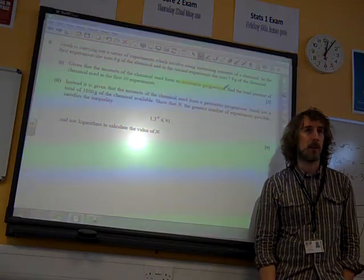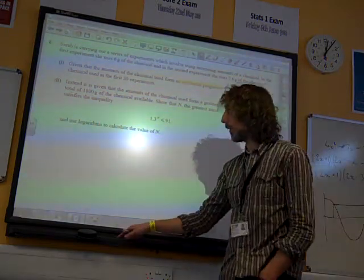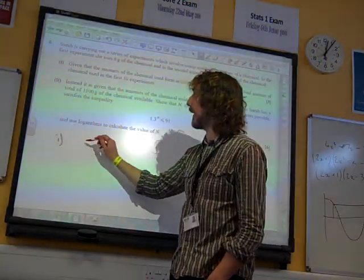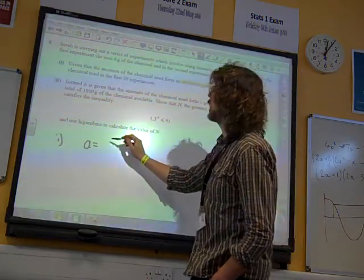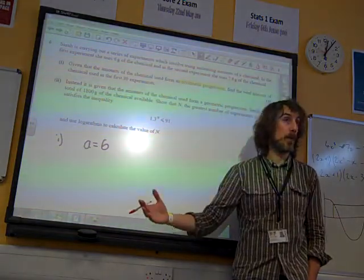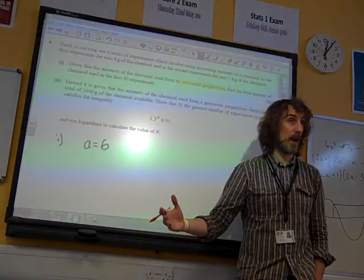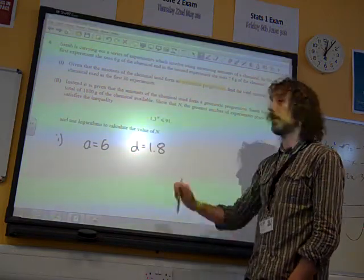Arithmetic, that's the one we add on the same amount each time. So that means in part one we're beginning with our initial amount being 6 and we've added on 1.8. So the common difference is 1.8.